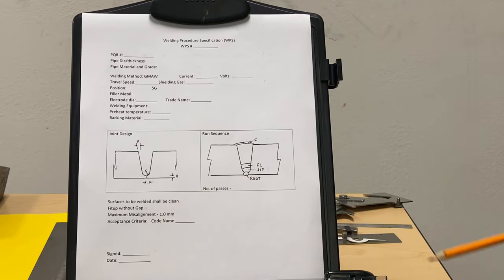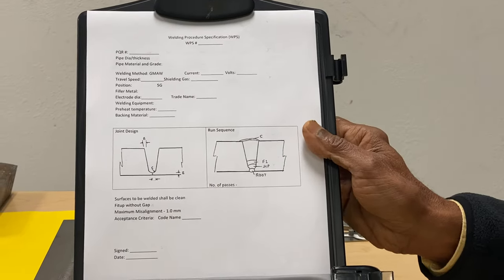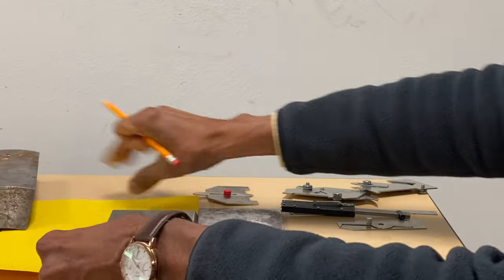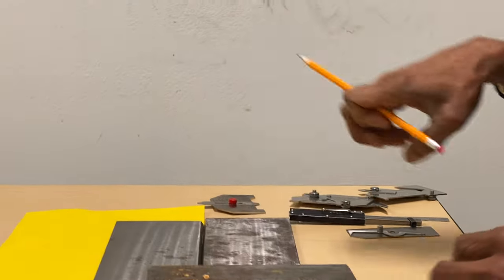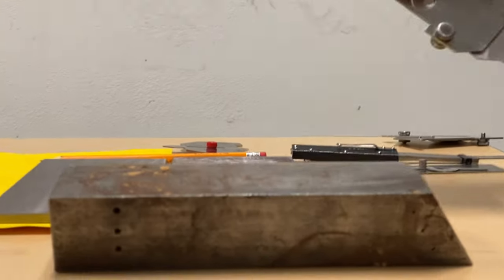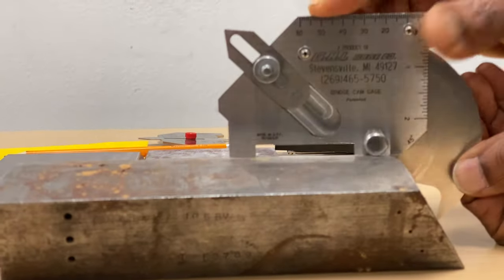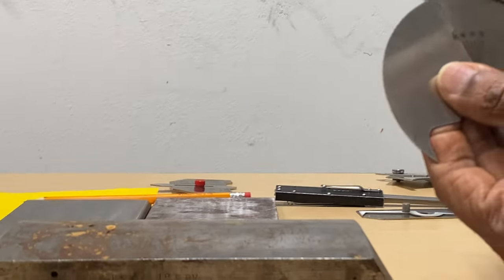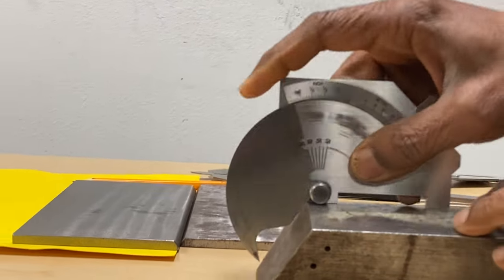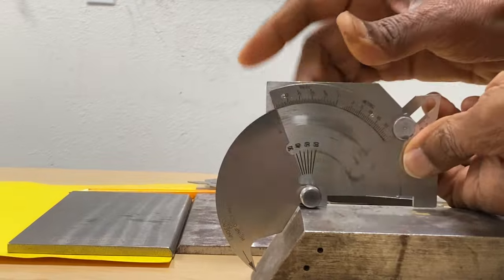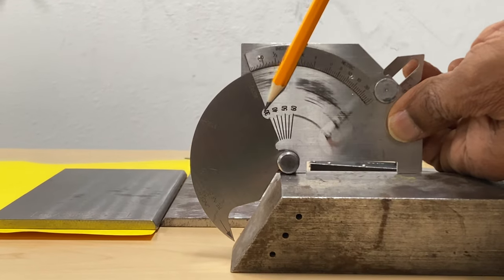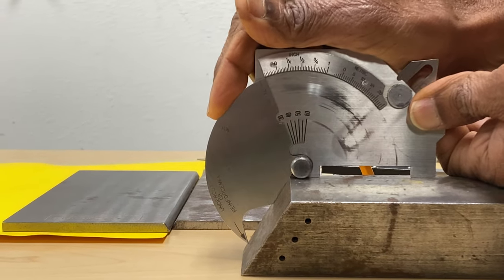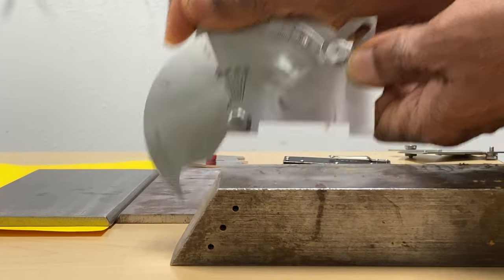The WPS has to be prepared, signed, and dated at the very bottom. Now we will go through the process of measurement. The first one is to check for the bevel angle, and for this we use a bridge cam gauge. We just put it here like this and the angle will show up — as you can see it is showing 30 degrees right here. That is the bevel angle, the first measurement we take to make sure it is in compliance.